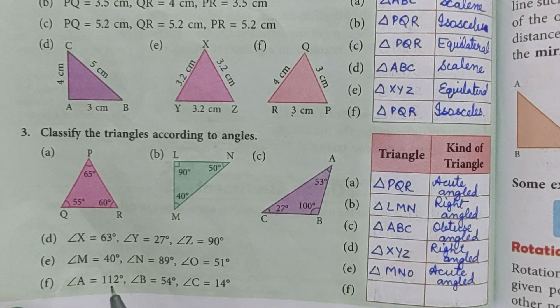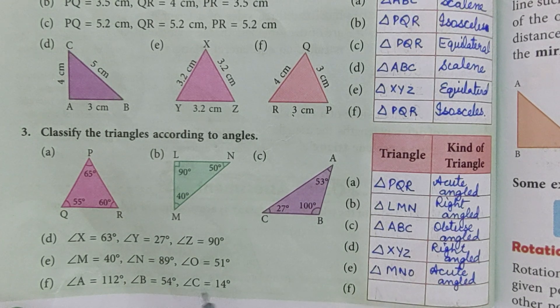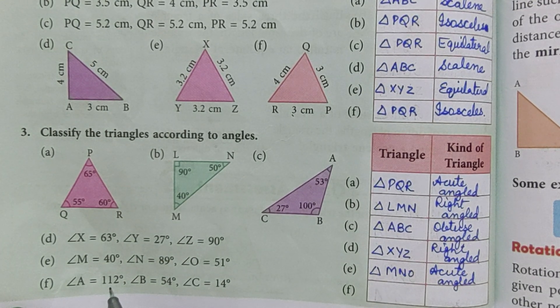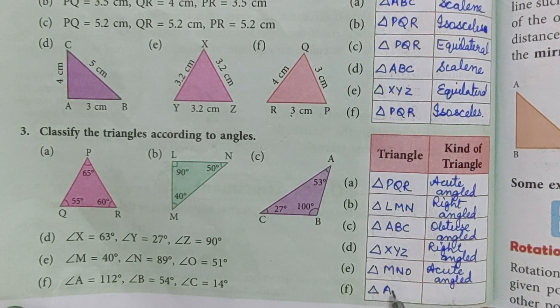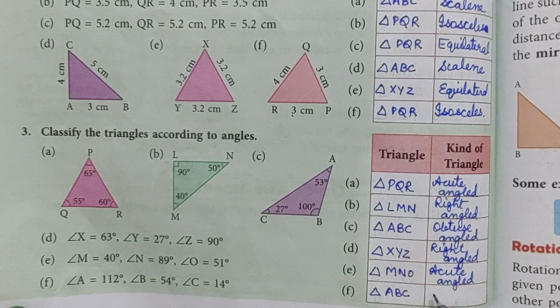Now last one, angle A 112 degrees, angle B 54 degrees, angle C 14 degrees. Two acute angles and one obtuse angle, so the name of triangle is triangle ABC and one obtuse angle is here, so it is an obtuse angled triangle.